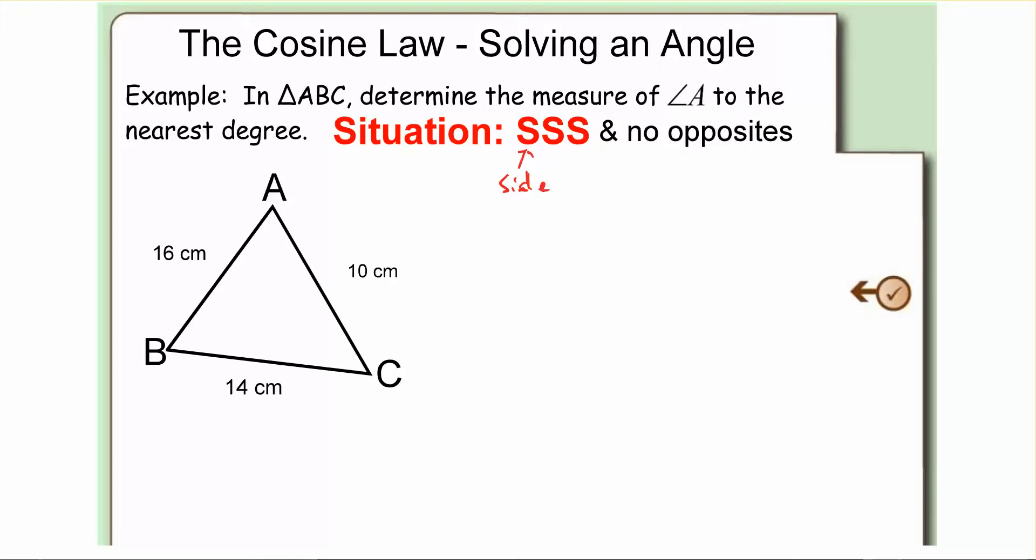So now the only problem with this one, though, is that on your guys' formula sheet, you don't have the rearranged formula for this. So two things, you can memorize it, or I could show you how to figure it out. Okay, so if you start off with your whole original formula, what we're looking for is one of the angles. And we're looking for angle A in this case. So we're looking for this, we want cos A on its own. So what we're going to do here, first off the bat, just to make things easier...